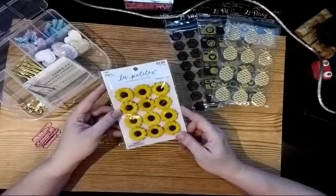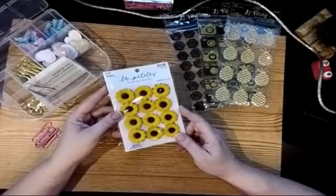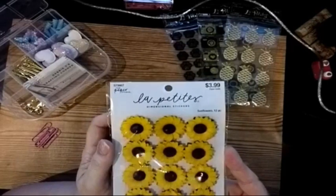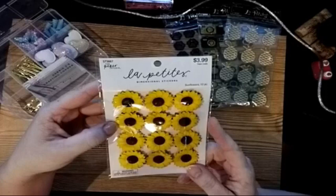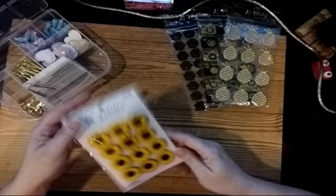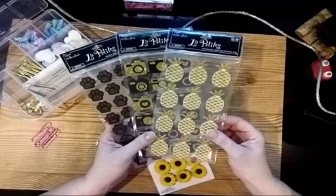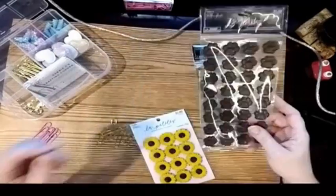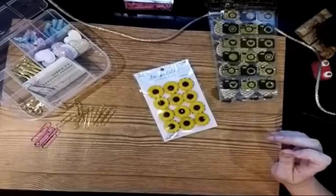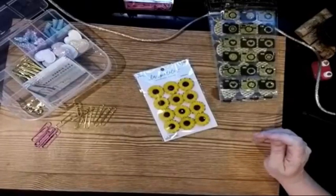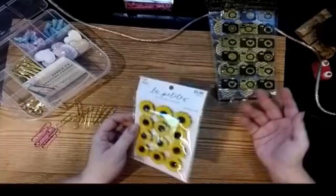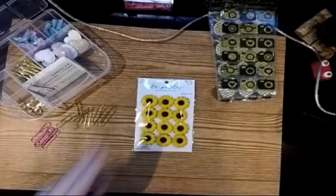This is a pack of sunflower stickers that I picked up at Hobby Lobby. Hobby Lobby does have a 50% off sale on all their Paper Studio items, and this is a Paper Studio item. So instead of spending $4 for 12 little sunflowers, I got it for about $2. And then I had gotten on another sale earlier these other ones. I've got pineapples and cameras and paw prints.